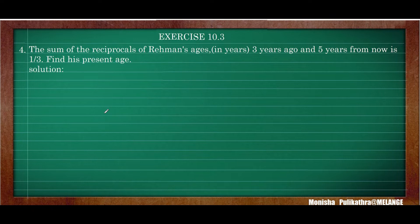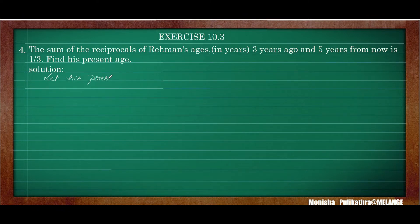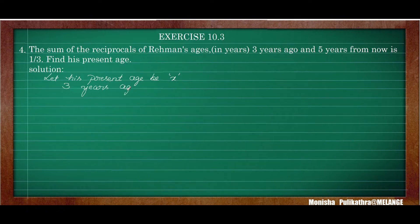Moving on to the fourth question. The question is: the sum of the reciprocals of Rahman's age in years three years ago and five years from now is one by three. Find his present age. We don't know the present age of Rahman, so let his present age be x. Three years ago his age would be x minus three.